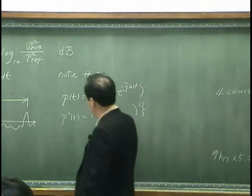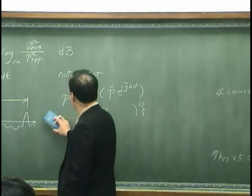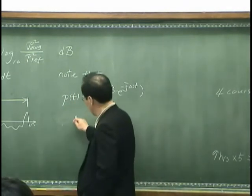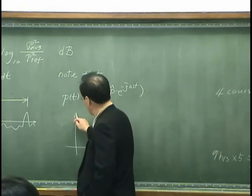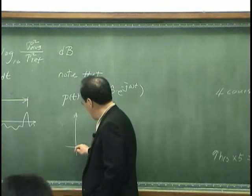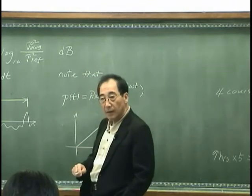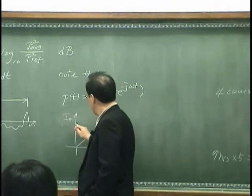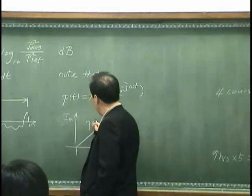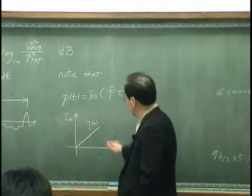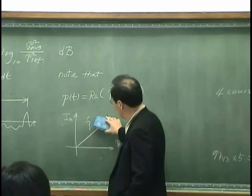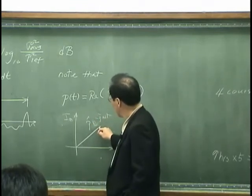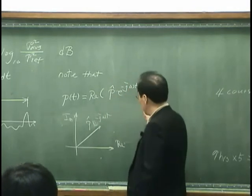So, instead of making this kind of error, as I used in the text, when I have complex variable, that has real part and imaginary part, and say this is Pt. P hat, exponential minus j omega t,